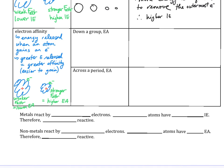Going down a group, the atoms are getting larger, so the nucleus's ability to attract nearby electrons is decreasing — electron affinity decreases as we move down the group. The increased number of shells leads to an increased shielding effect, which leads to a weaker force of attraction, and therefore a lower affinity for nearby electrons — a lower electron affinity.